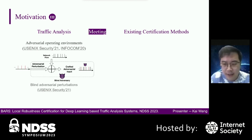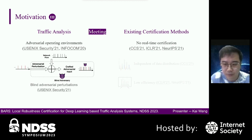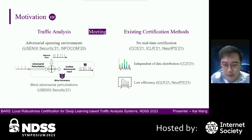Thirdly, traffic analyzers always run in adversarial environments. Attackers can slightly manipulate traffic features to defeat traffic analyzers in real-time. Therefore, we need a real-time detection technology. However, existing certification methods have poor real-time capability — some are independent of the data distribution, others have low efficiency. Therefore, we need real-time certification.